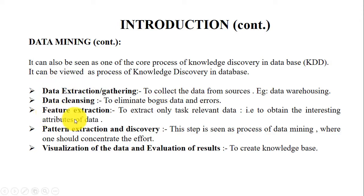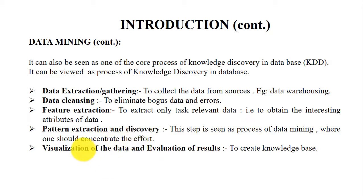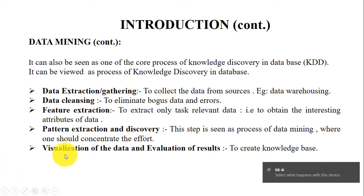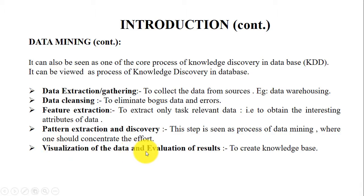The third step is feature extraction. It includes extracting the relevant data or the best and optimized features — extracting those kinds of important features from the data. The fourth step is pattern extraction or discovery. This step consists of data mining techniques like machine learning algorithms in order to extract information from the collected data. Then comes visualization of data and evaluation of the result. The patterns discovered using the data mining process are basically used as a knowledge base for future prediction.